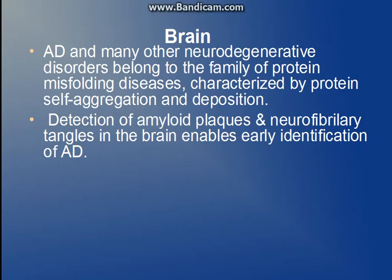Now going to the brain. As discussed in the previous video, Alzheimer's disease, neurodegenerative disorders, and prion disease all involve the brain — they are a family of diseases in which there is misfolding of the protein, and therefore amyloid is present. We can detect amyloid plaques and neurofibrillary tangles, which enable the identification of Alzheimer's disease.